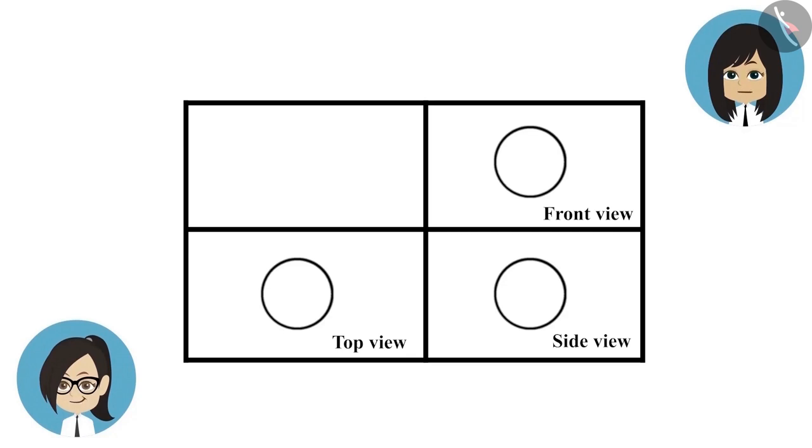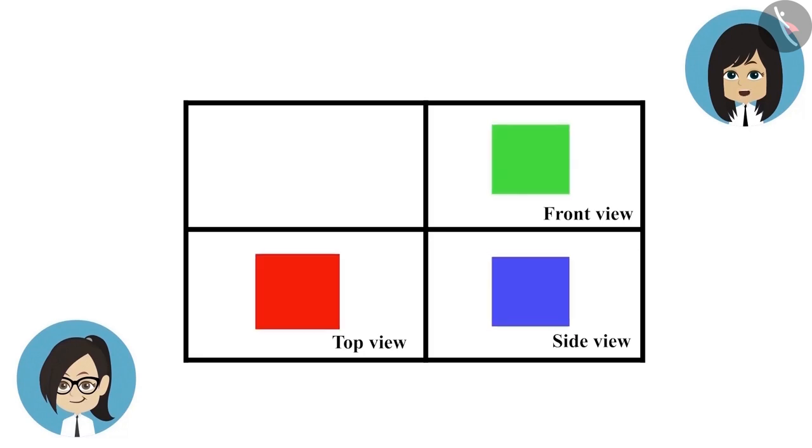...should be different. Hey, I have another drawing in which all three views of one object are the same. Show that also. See this - all these are in the shape of a square, and that too of the same size.